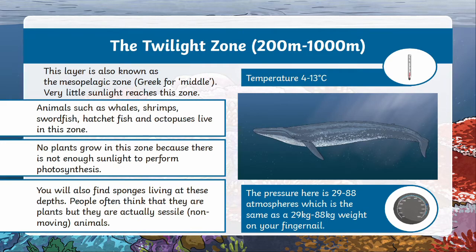If we dive a little deeper, the twilight zone is between 200 and 1000 meters below the surface. This layer is also known as the mesopelagic zone and very little sunlight reaches this zone. This zone is home to animals like whales, shrimp, swordfish, hatchet fish, and octopi. No plants grow in this zone because there isn't enough light to perform photosynthesis. You won't find any sponges living in these depths because although people often think they're plants, they're actually non-moving animals. This zone is a little bit colder than the sunlight zone at 4 to 13 degrees Celsius.